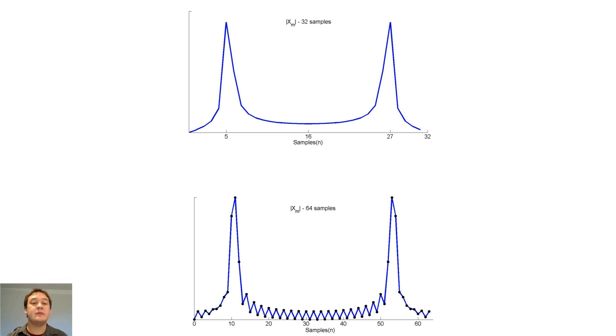Notice that the zero padded DFT does not look more like a set of impulse functions than the original 32 sample DFT. Instead, the function looks like it has a series of humps. We call these humps side lobes.